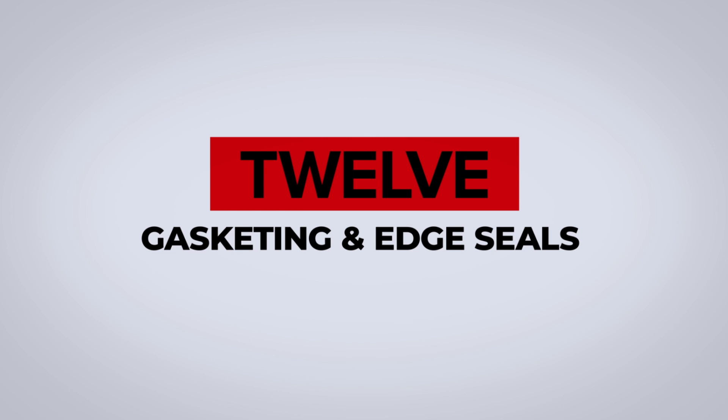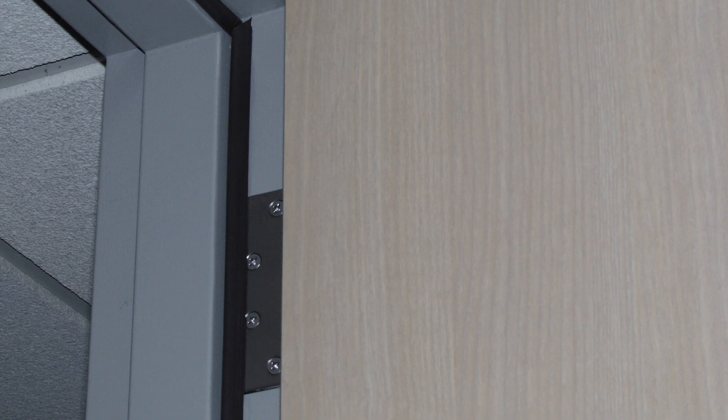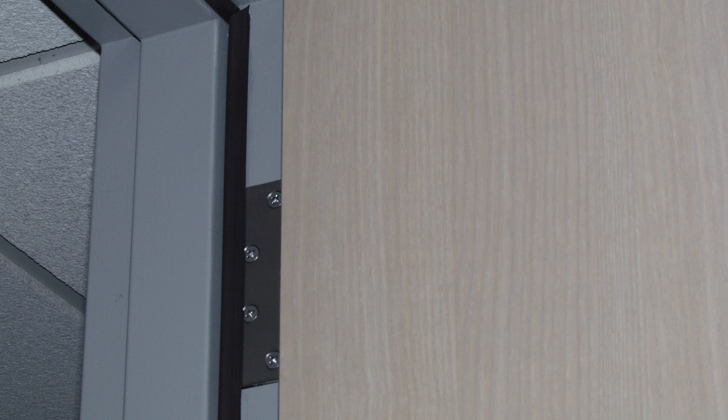Number 12: Gasketing and edge seals, where required, are present, continuous, and of the proper type for a fire door. Gasketing is typically required for fire doors in corridors and smoke barriers, but not required for every fire door assembly. Gasketing installed on fire door assemblies must be listed for that purpose. There is an exception for continuous gasketing in the case of a hospital stop where the gasketing is terminated 6 inches or so above the bottom of the frame.